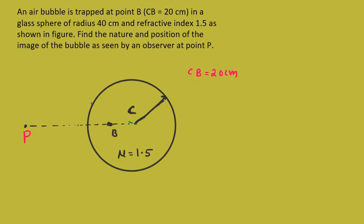An air bubble is trapped at point B in a glass sphere of radius 40 cm and refractive index 1.5 as shown in the figure. Find the nature and position of the image of the bubble seen by an observer at point P.